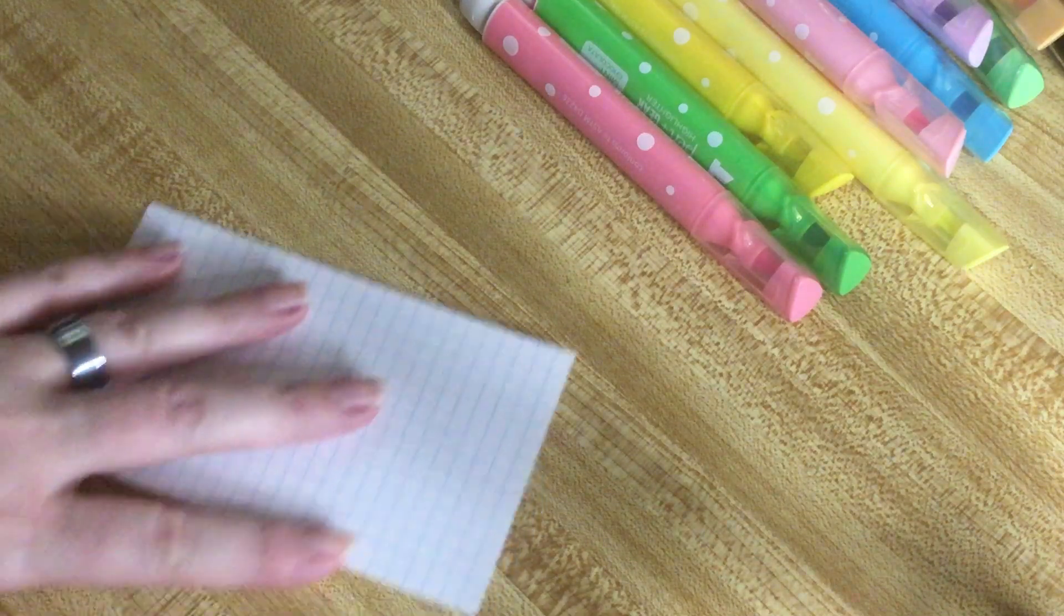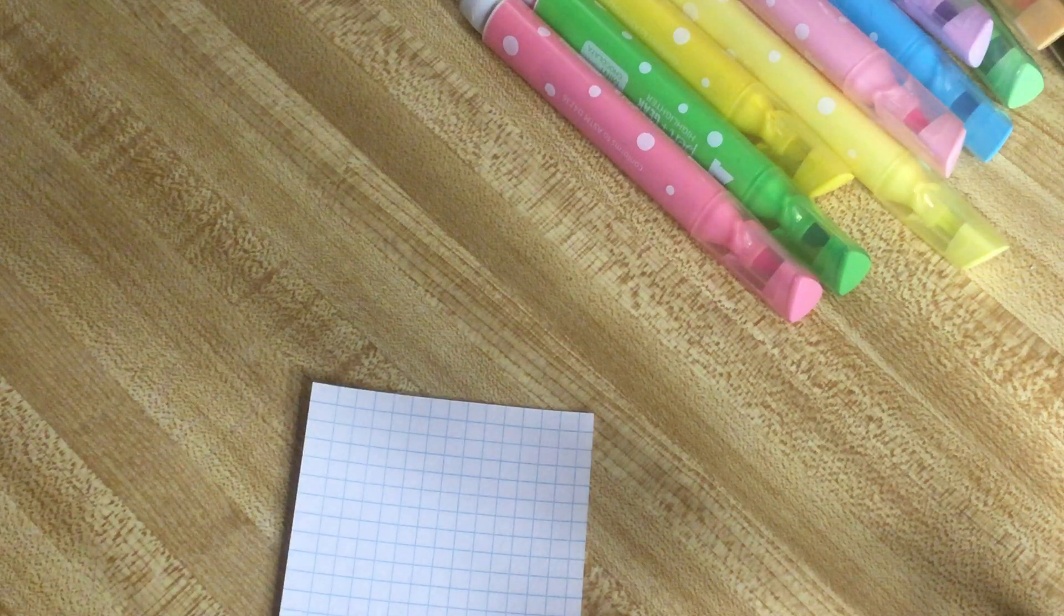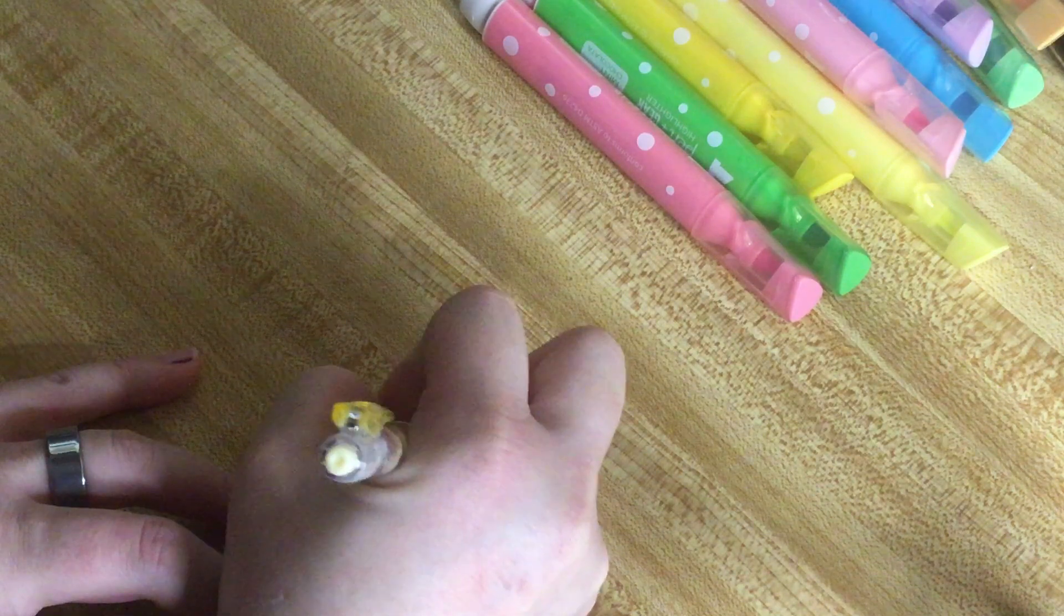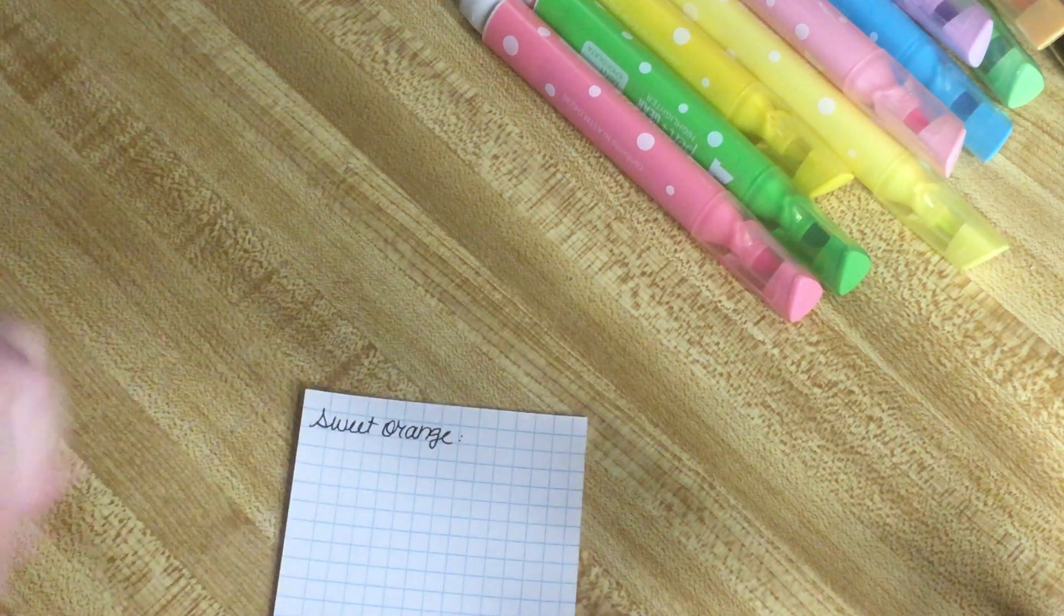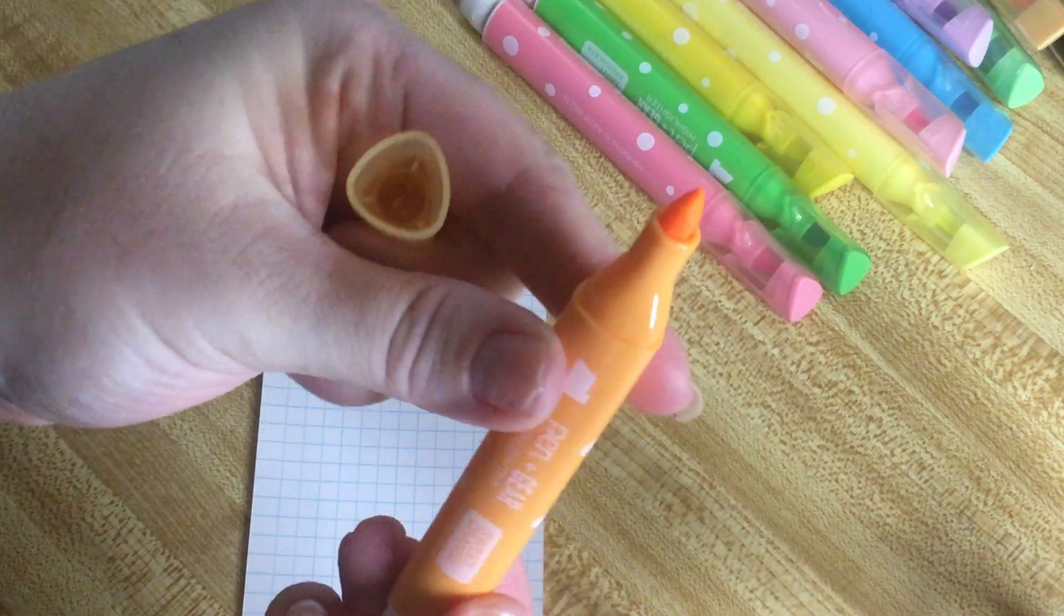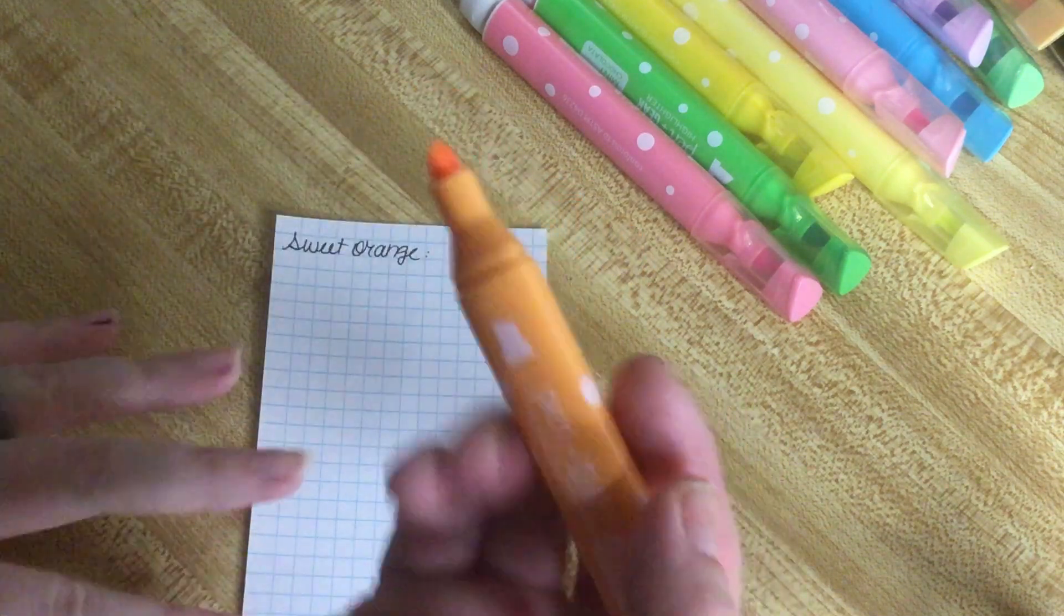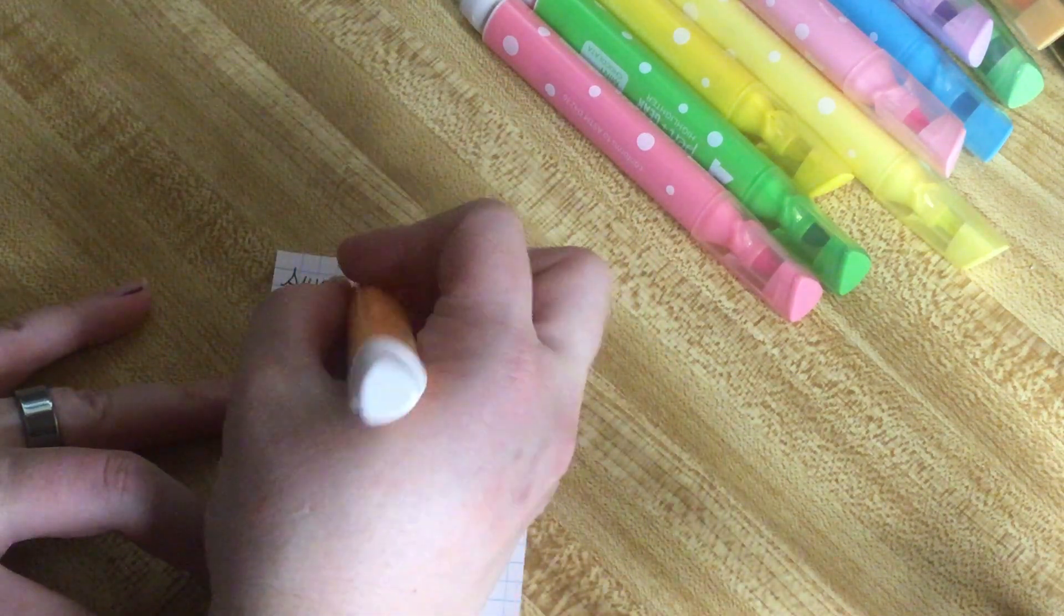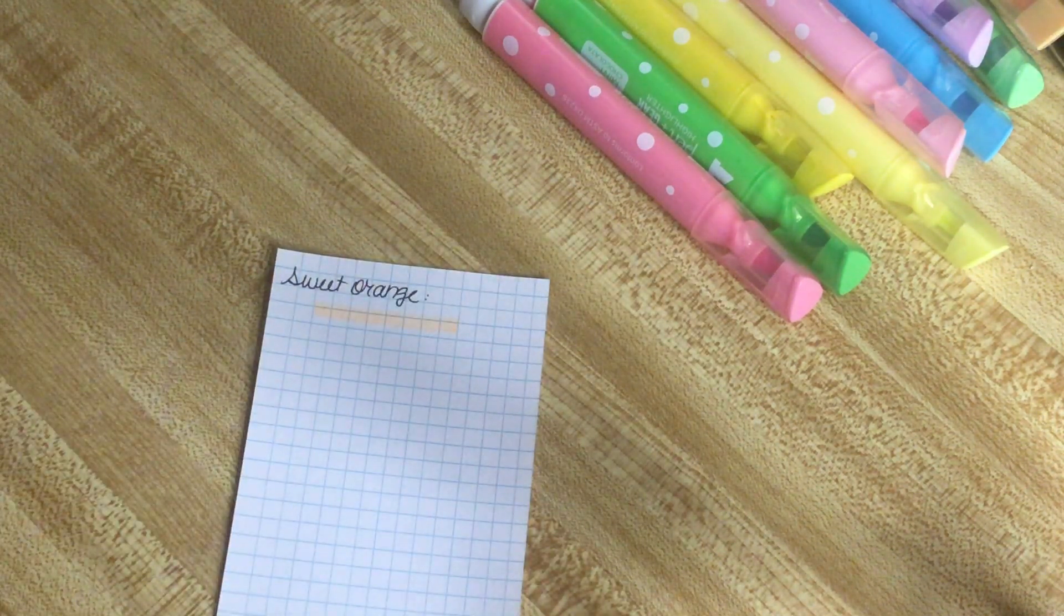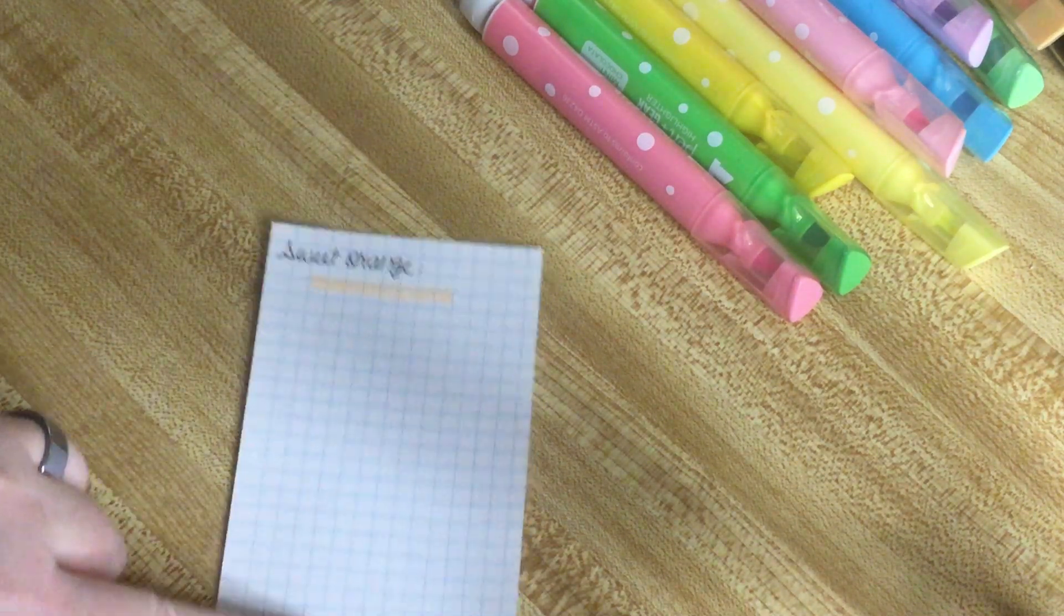This one's called Sweet Orange. This is a big chisel tip by the way, it's not a thin highlighter at all, it's very thick. It's very light for an orange. It does smell like sweet orange, it smells like orange juice. It really does. This one, five stars.